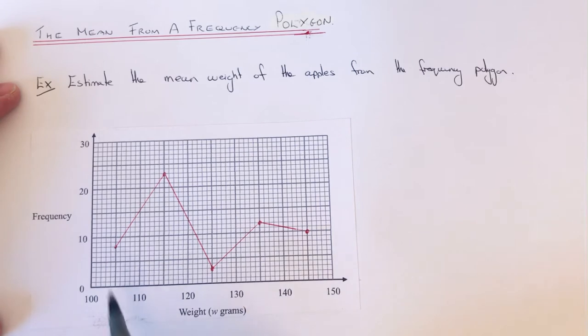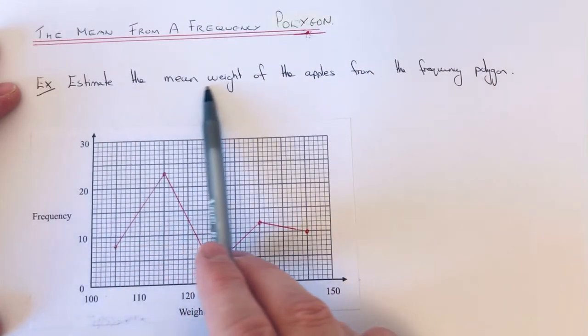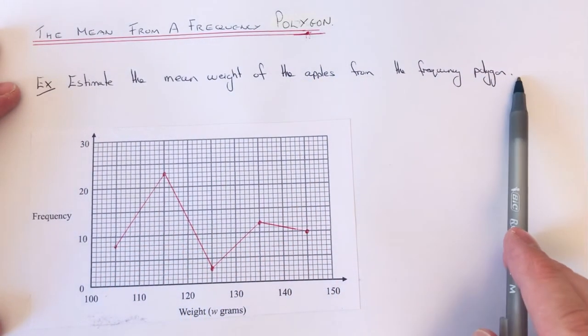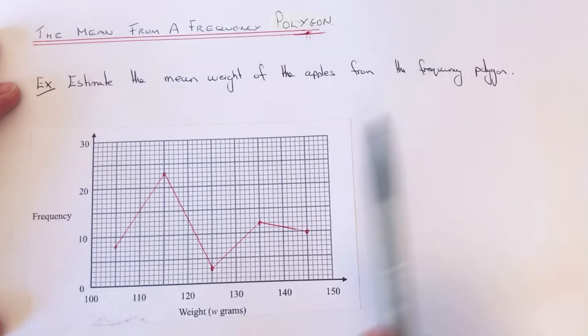So let's have a look at the example here. We're going to estimate the mean weight of the apples from the frequency polygon.